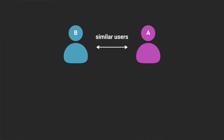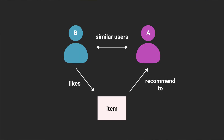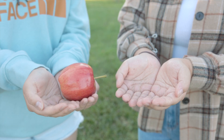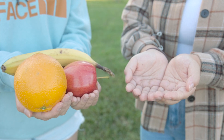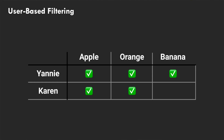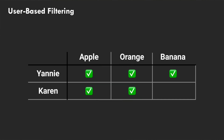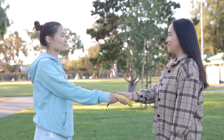In user-based collaborative filtering, the idea is to draw similarities between groups of people and make recommendations based on the premise that if two users are alike, then it's highly likely that user A will like something that user B likes. Let's say Yanny likes apples, oranges, and bananas. Karen, who only likes apples and oranges but does not know bananas exist, is looking for new fruit recommendations. Since both Yanny and Karen like apples and oranges, we can consider them to be similar users with similar tastes in fruit. In this case, it would be reasonable to recommend bananas to Karen, since it's the only fruit liked by Yanny but not yet by Karen, meaning it's likely that Karen will also like bananas.